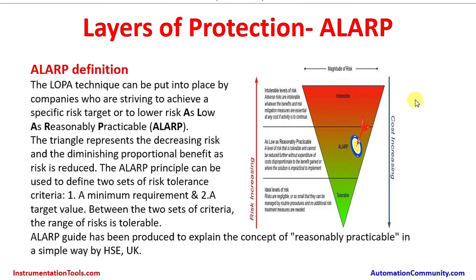From the intolerable level to the tolerable level, moving across the triangle requires spending money — costs keep increasing as you undertake this exercise to achieve the practically tolerable limit. Companies need to strike a balance between the intolerable zone and the tolerable zone, which is known as as low as reasonably practicable.